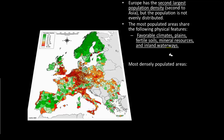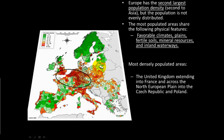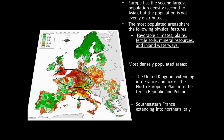Looking at the most densely populated areas in Europe by region: the United Kingdom extending from France across the northern European plain into the Czech Republic and Poland is one of the most densely populated areas. Southern France extending into northern Italy is another very densely populated area — this is south of or right around the Alps region.